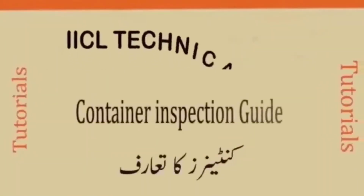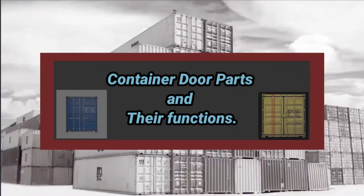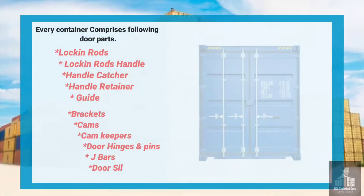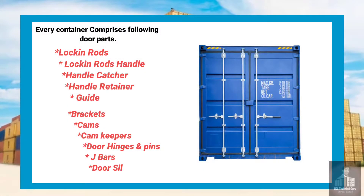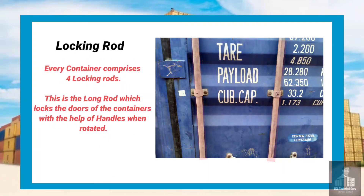Welcome to the container inspection tutorials. In this video, we are going to learn about container door parts and their functions. Every container comprises the following parts — I will describe them one by one in detail. Locking bars: every container comprises four locking rods. This is the long rod which locks the doors of the containers with the help of handles when rotated.